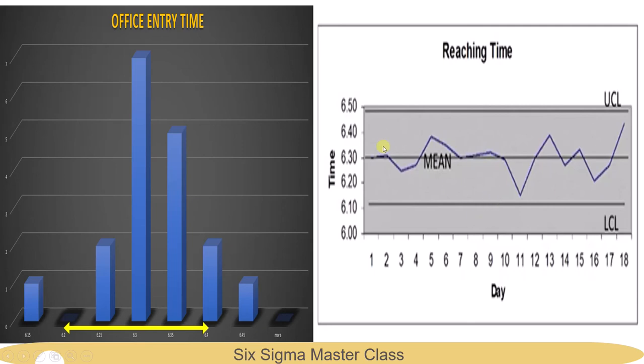Here, we are plotting the mean time. The blue line is the mean. Then, there is an upper control limit set at 6.50 a.m. and a lower control limit set to 6.10 a.m. The upper limit and lower limits are tolerances.